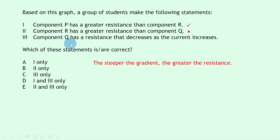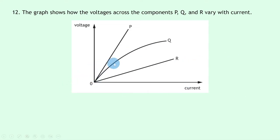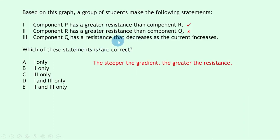Statements 1 and 3 are correct. Component Q has a resistance that decreases as current increases, visible from the decreasing steepness of the tangent to the curve. So the answer is D.